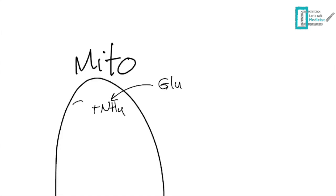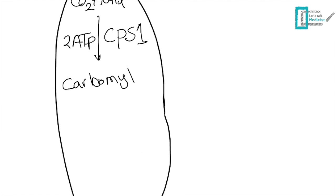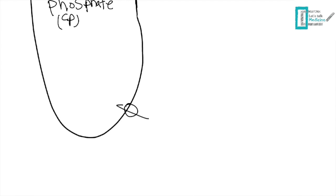In the first step, excess ammonium reaches the liver carried by glutamate or glutamine, and combines with carbon dioxide that comes from bicarbonate. This occurs with the help of an enzyme called carbamoyl phosphate synthetase, or CPS1, and requires two ATP to be completed, giving us the molecule called carbamoyl phosphate.